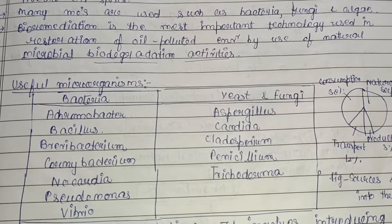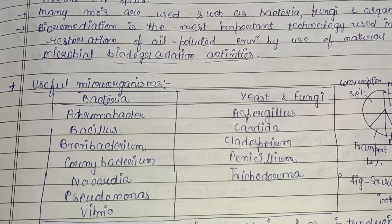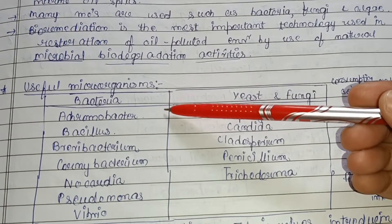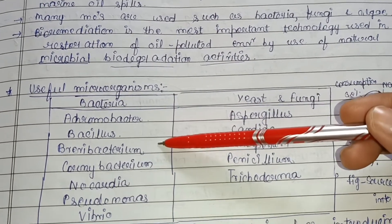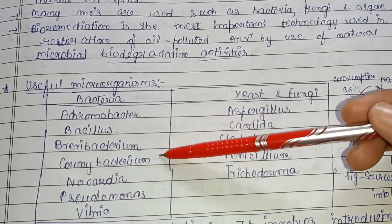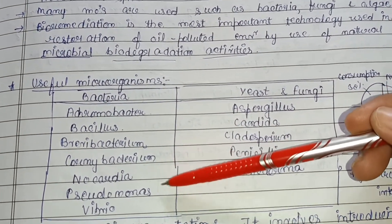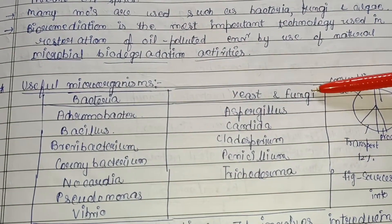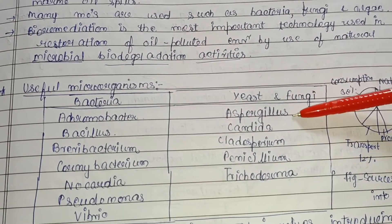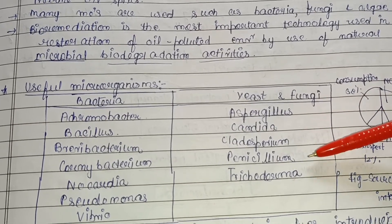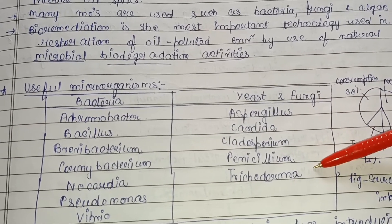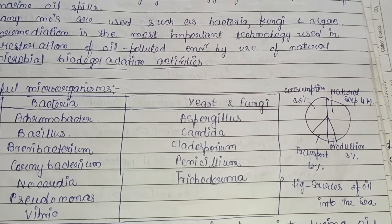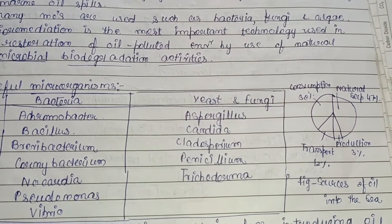The useful microorganisms used in the treatment of oil spills include, in the case of bacteria: Achromobacter, Bacillus, Brevibacterium, Corynebacterium, Nocardia, Pseudomonas, and Vibrio. In the case of fungi: Aspergillus, Candida, Cladosporium, Penicillium, and Trichoderma.